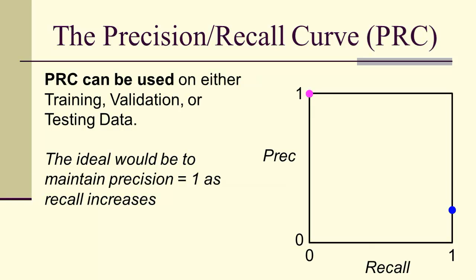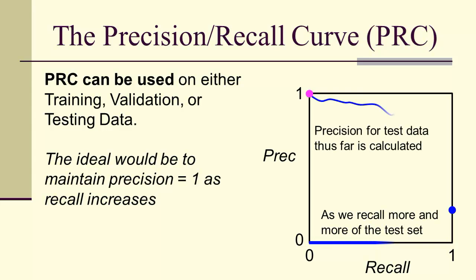Now we'll use the precision recall curve, PRC, on training, validation, or test data. But of course, where it's most meaningful is ultimately on the testing data. The idea would be to get a precision of 1 for as long as possible. A precision recall curve looks like this: as we recall more and more of the test data, the precision is calculated, and hopefully it stays up there close to 1 for as long as possible.